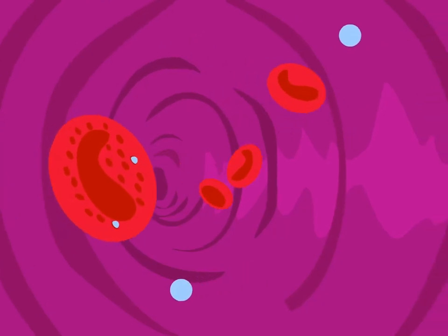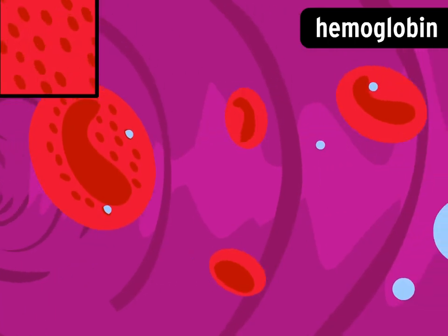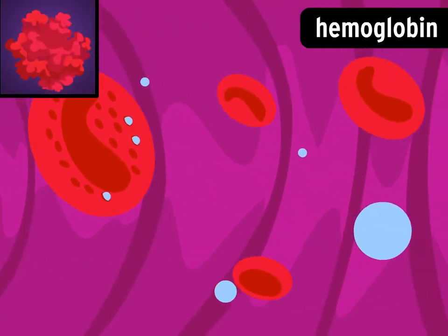DNA tells your red blood cells to build a protein called hemoglobin. It captures oxygen as blood passes through the lungs.